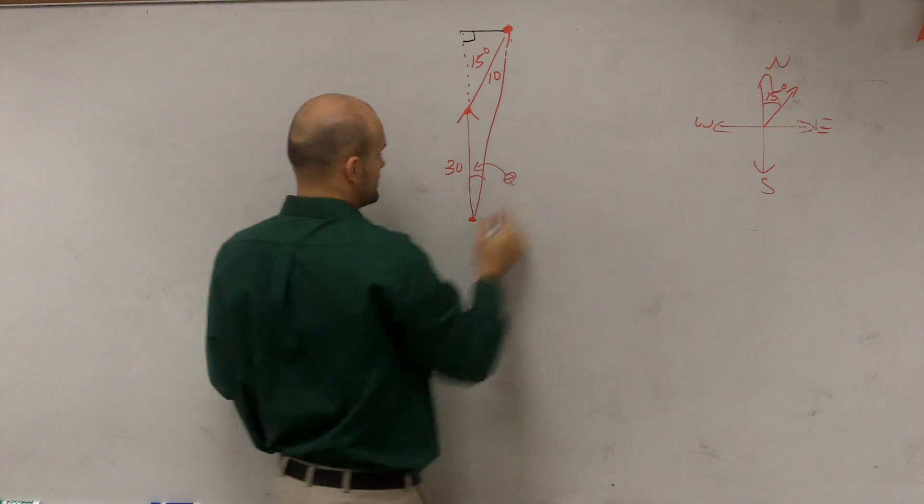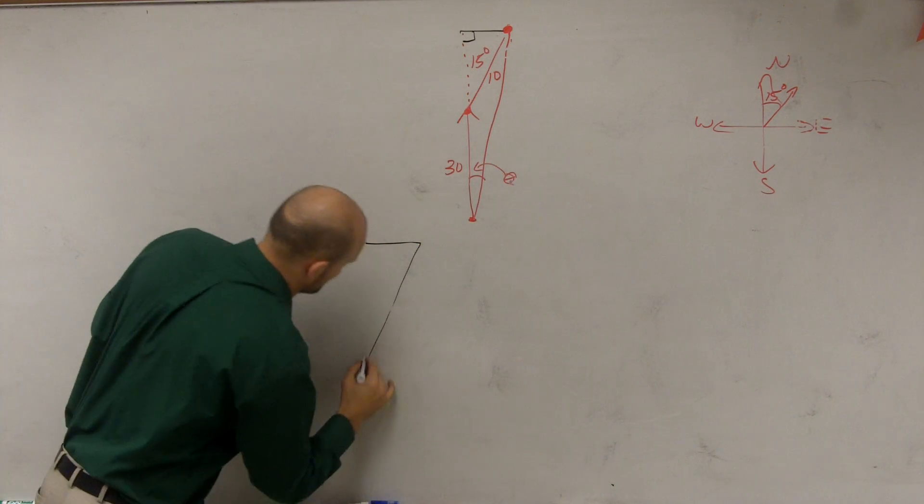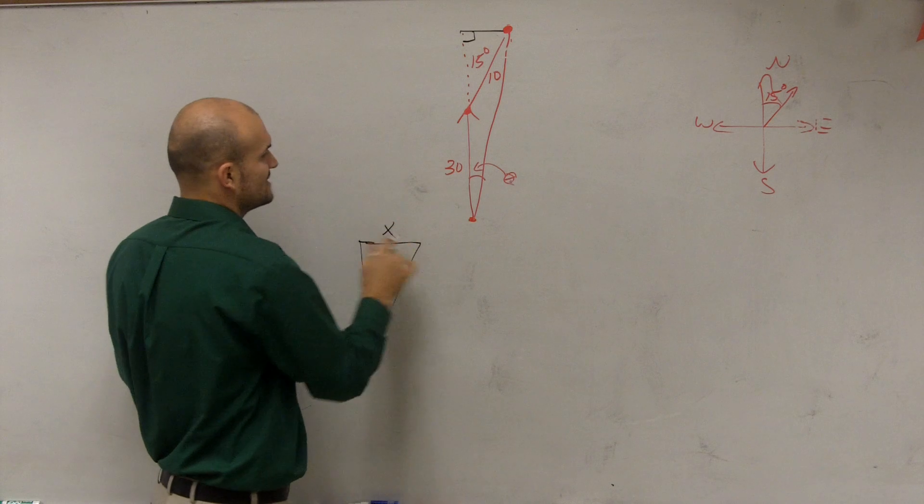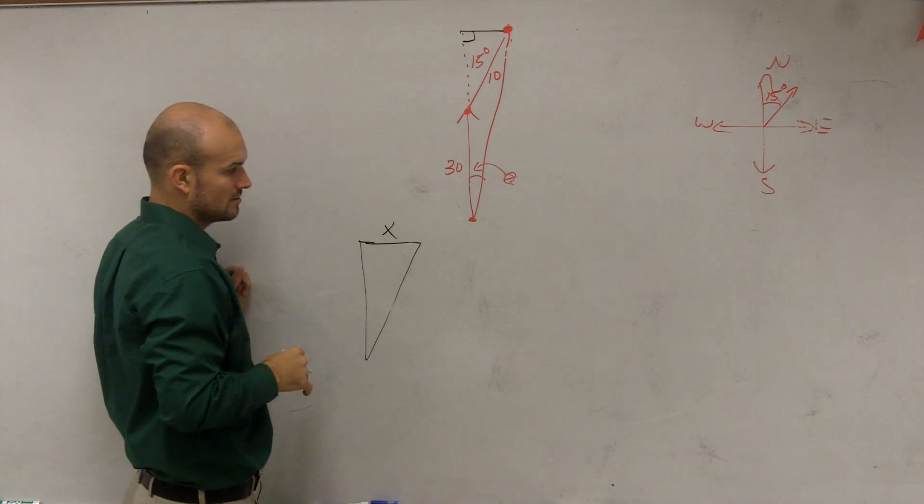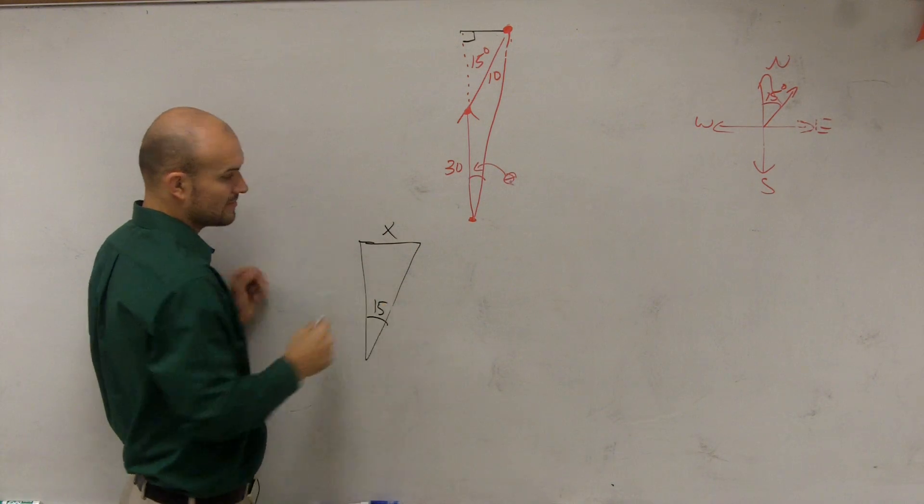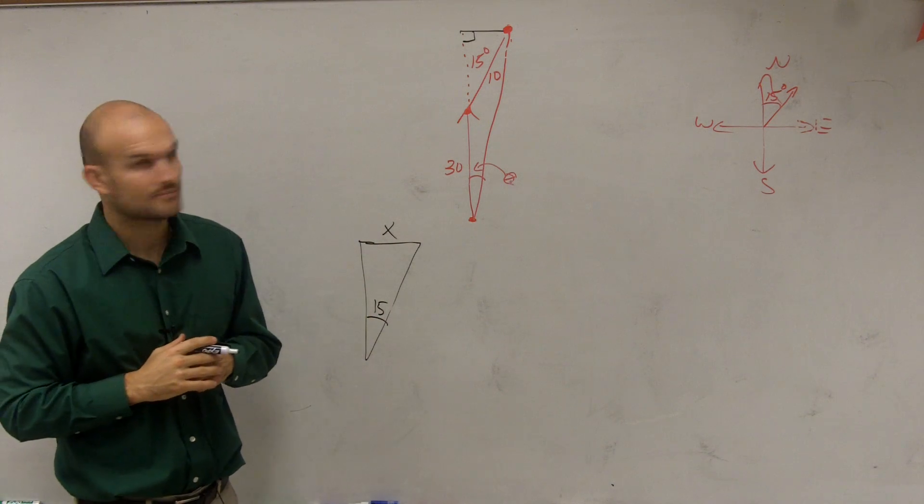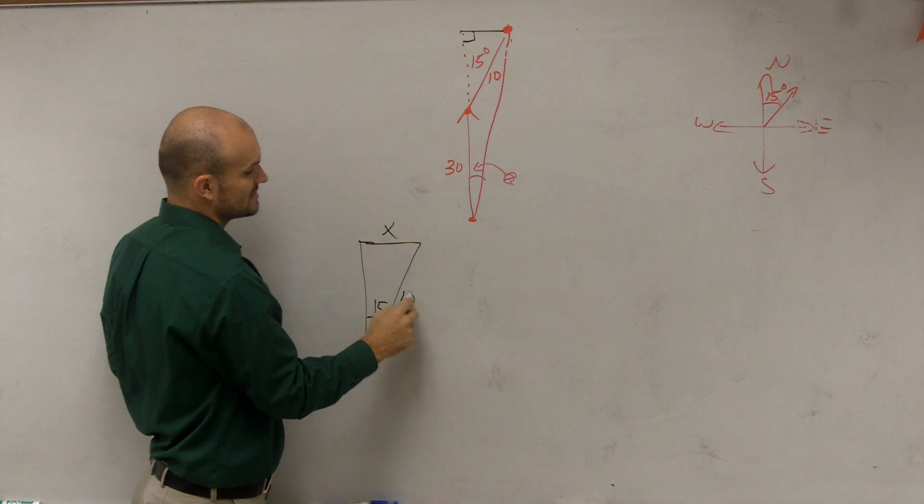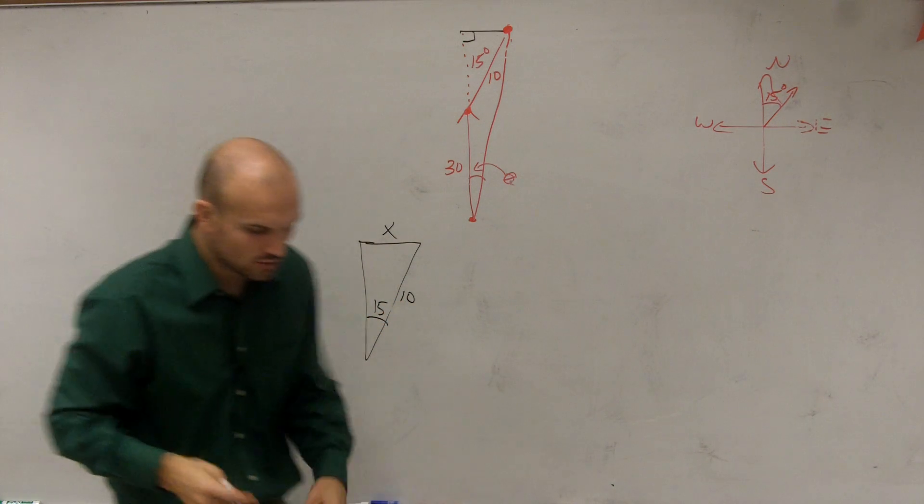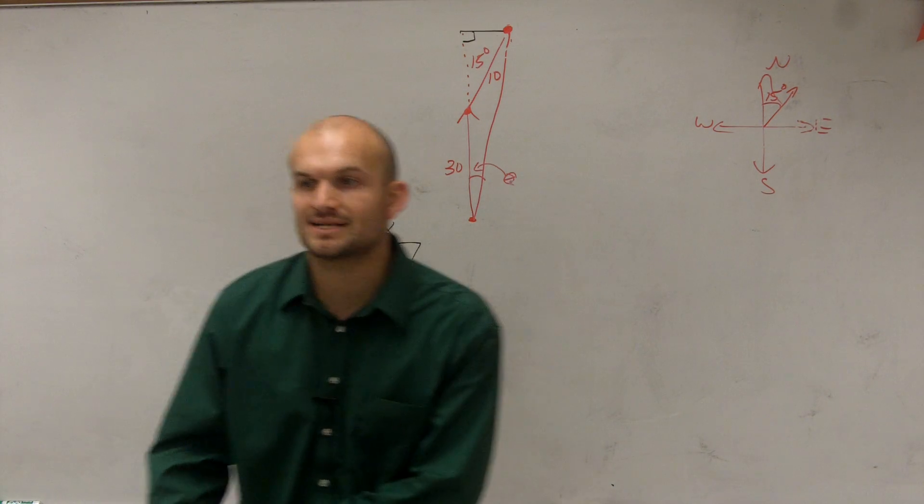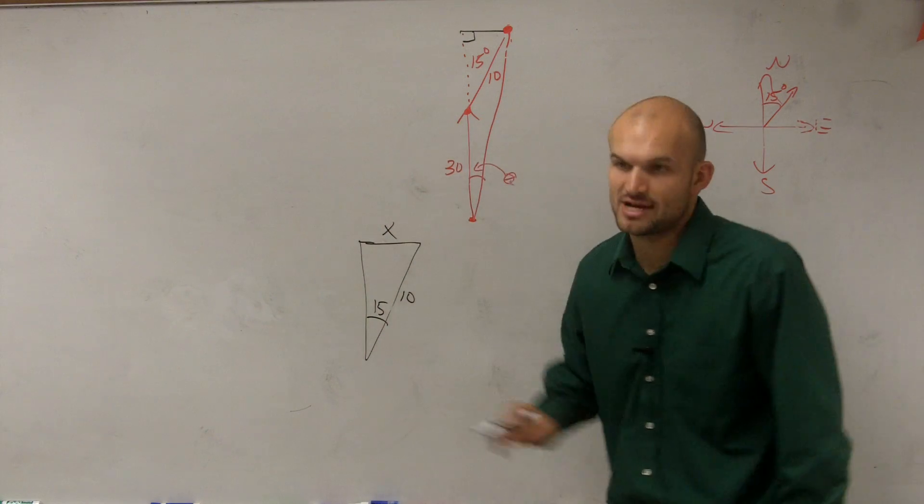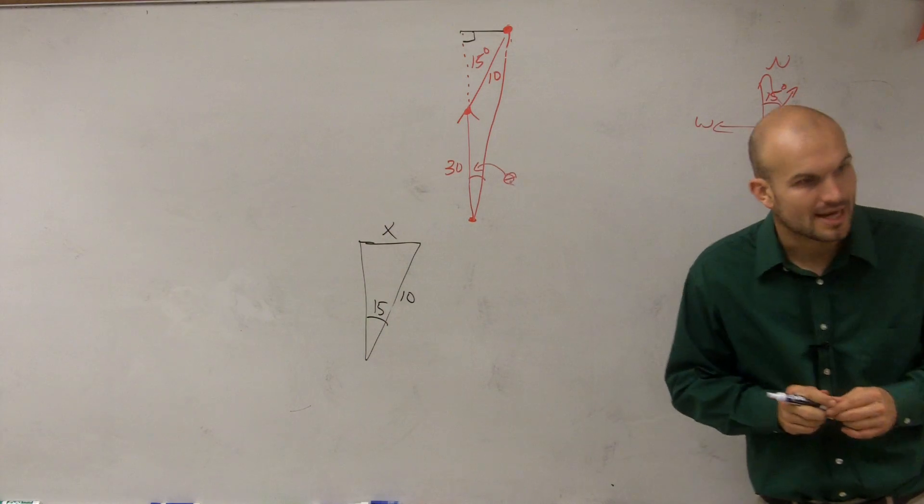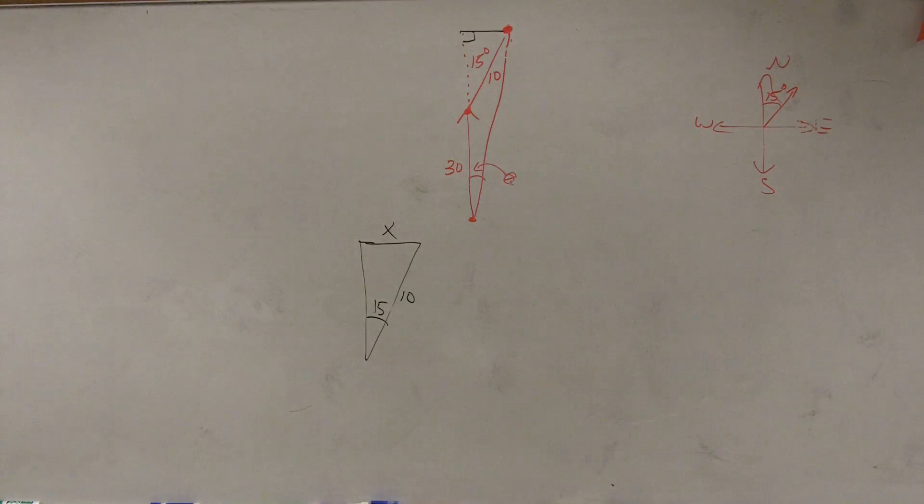Therefore, I have a triangle that's going to look like this. I don't know what the distance over is. I know that my angle is 15 degrees, and I know that my hypotenuse, this distance, is 10. So by knowing those two measurements, can we figure out what x is? Yes, exactly. So what we're going to do, I'll borrow a nice calculator from a lovely student.